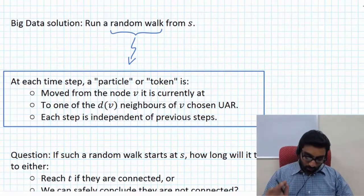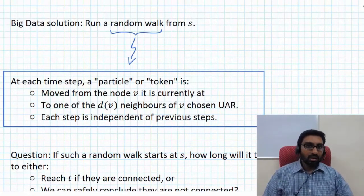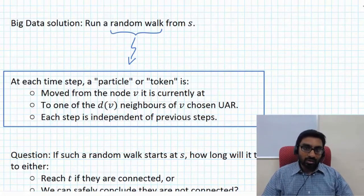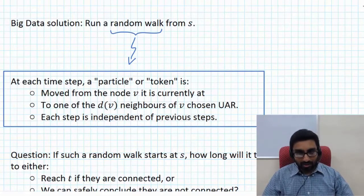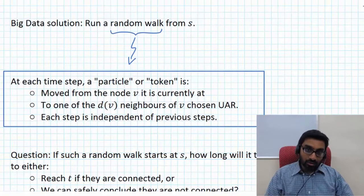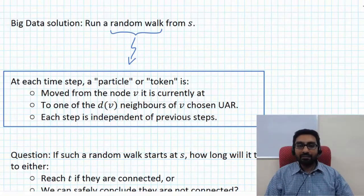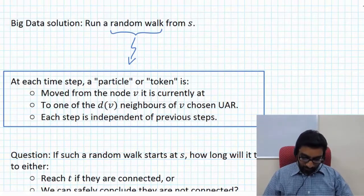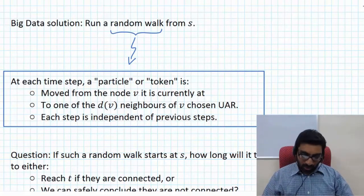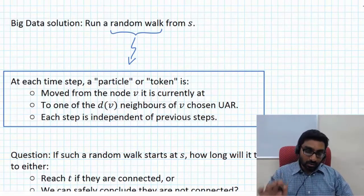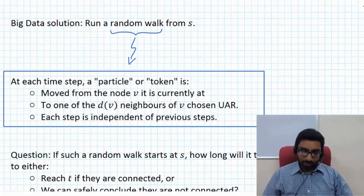We are interested in a random walk solution. At each time step, think of a particle or token at some vertex. From its current location V, it chooses one of the d_V neighbors of V uniformly at random and moves to that neighbor. Each step is independent of previous steps — it only depends on the current location, from which one neighbor is chosen uniformly at random.